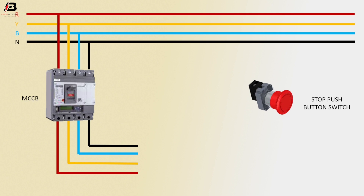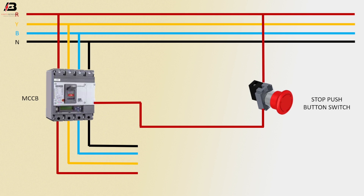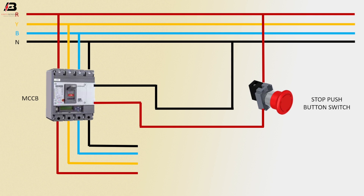Output from MCCB: first phase connection from MCCB connects to the stop push switch and again connects to the main first phase line. Neutral connection from MCCB connects to the main line. These four terminals are for the output line.